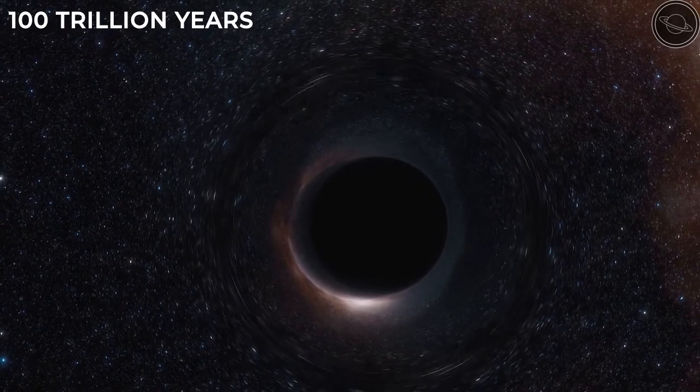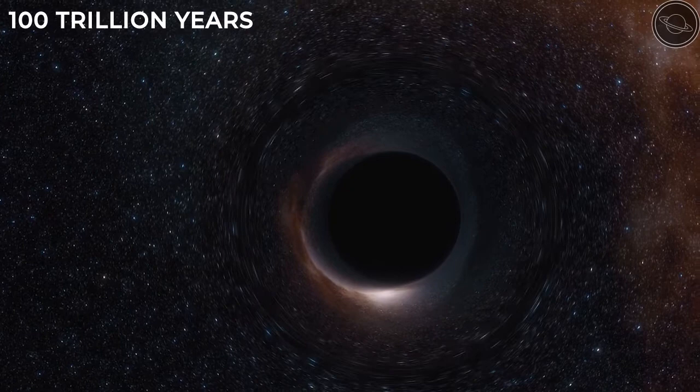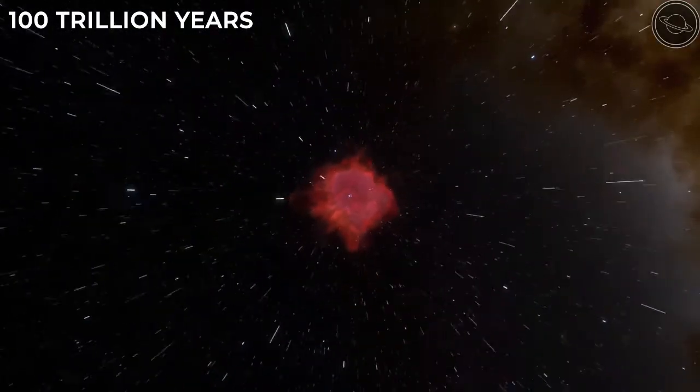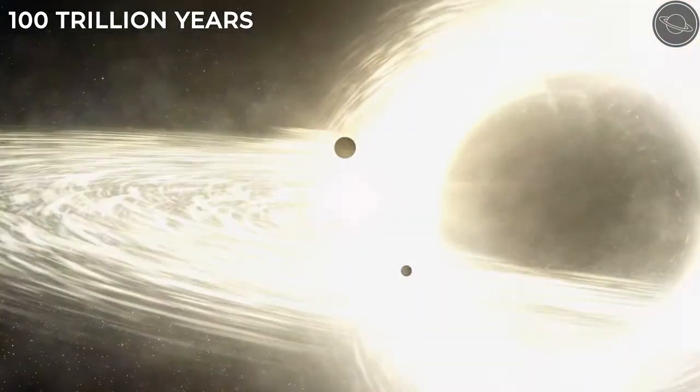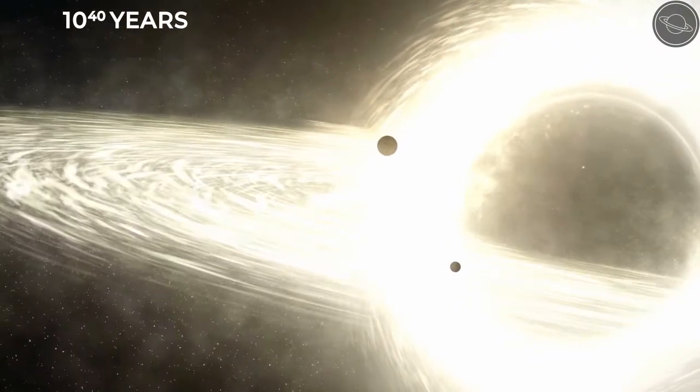star formation ceases completely, and all that is left in the universe is black holes and interstellar dust. The era of stars and nebulae is gone, and we now enter the black hole era, at 10 to the 40 years. But even these structures will not last forever.